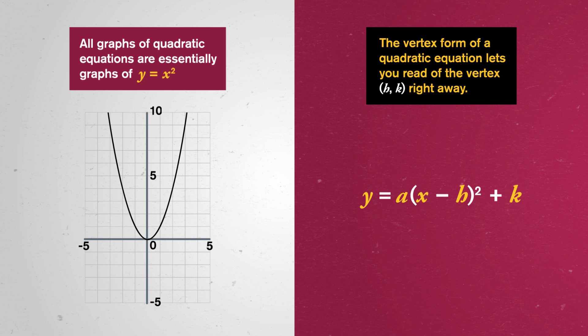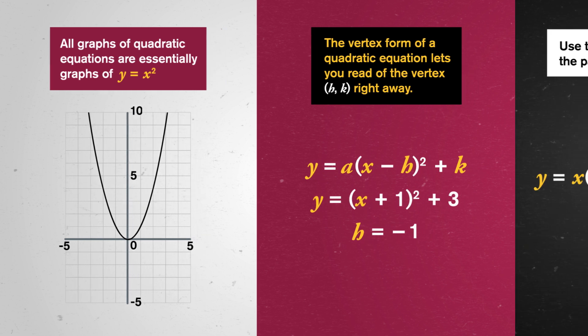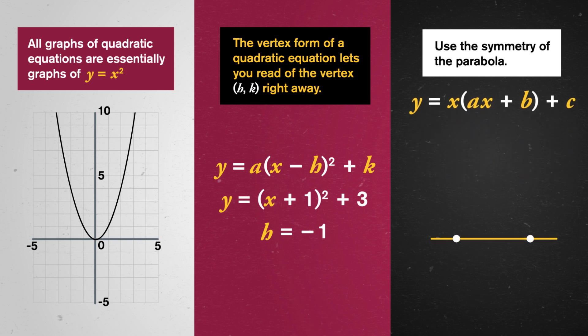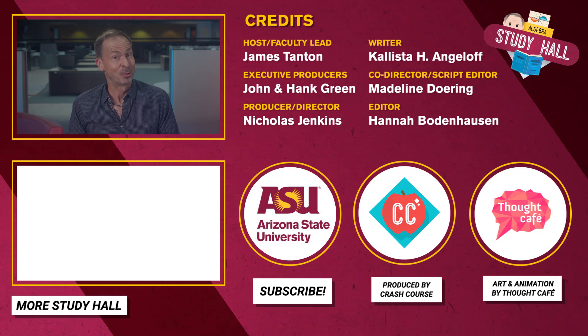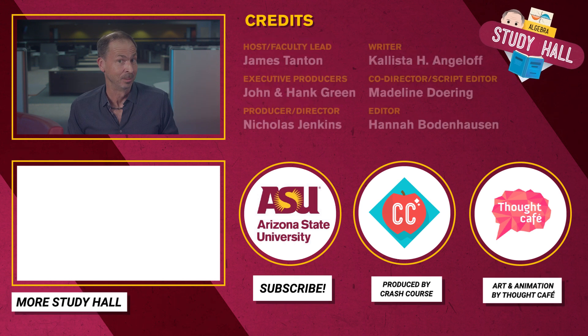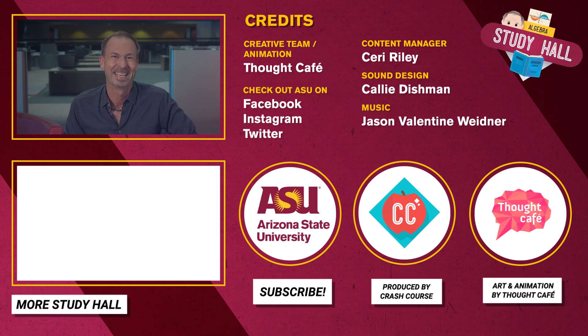Remember that h is being subtracted from x, so if you have something like y equals x plus 1 squared plus 3, h must really be negative 1. To easily graph a quadratic, use the symmetry of the parabola: write it as y equals x times ax plus b plus c, find the two x values that give the same y value c, and halfway between those points is the line of symmetry and the vertex. Next time, let's revisit linear equations and see how graphing can even help us solve simultaneous equations. Thanks for watching Study Hall Algebra, produced by Arizona State University and the Crash Course team at Complexly. If you like this video and want to keep learning, be sure to subscribe.